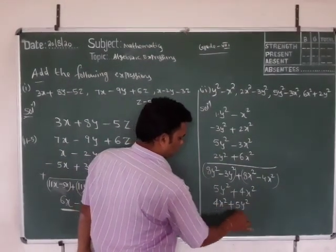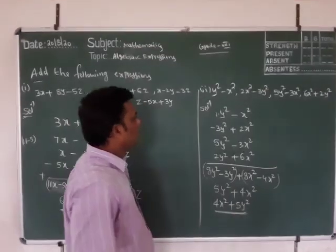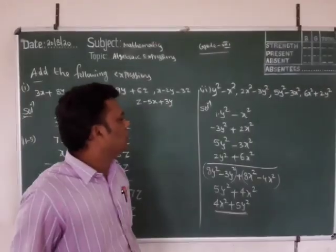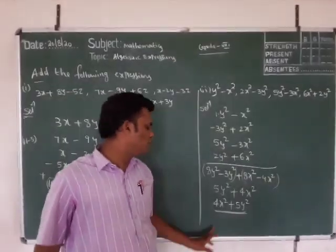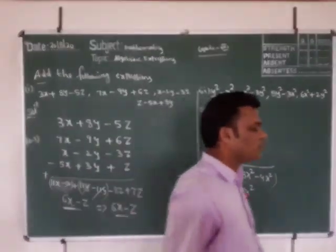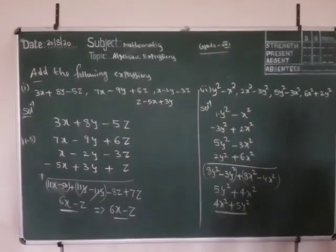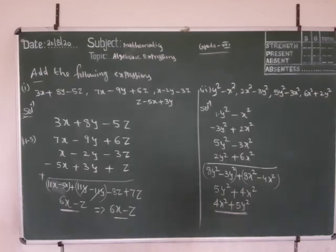Therefore our final answer is 4x squared plus 5y squared.